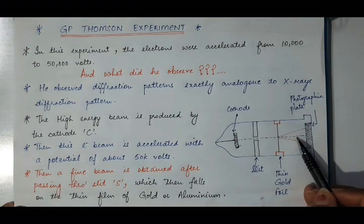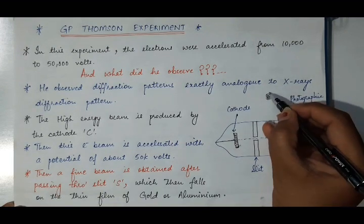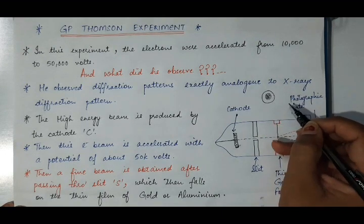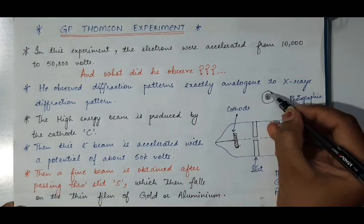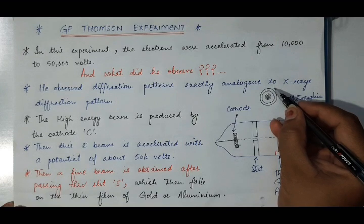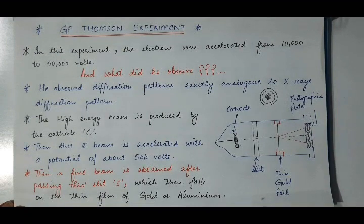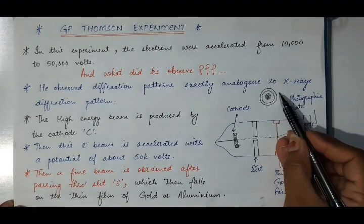First there is central maxima, then first minima, then first maxima, then again minima, then second maxima, then again minima, then third maxima. The intensity of the maxima decreases because in diffraction, intensity decreases as the order of diffraction increases — first order, second order, third order, and so on.